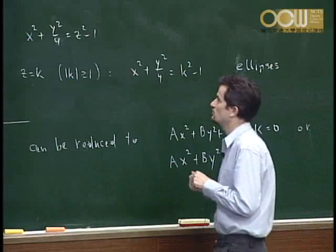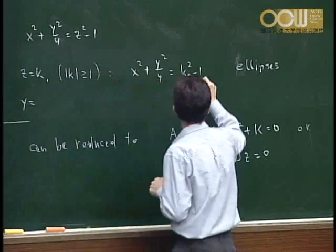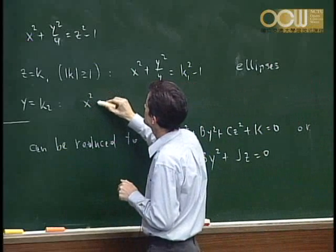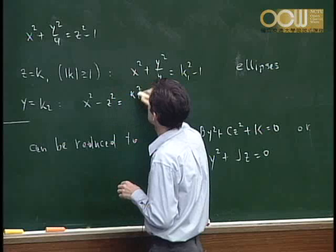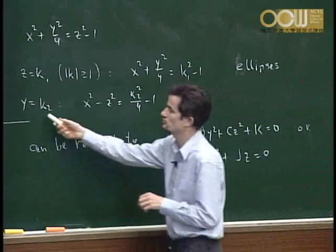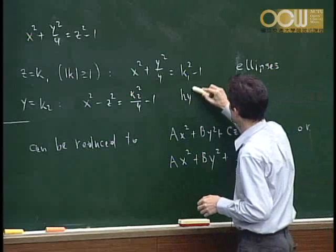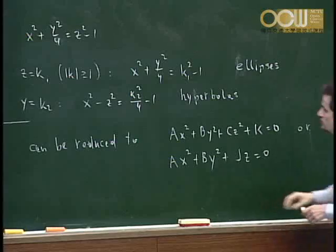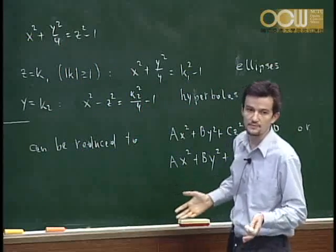If instead we set y equal to some constant k2, then we have x squared minus z squared equal to k2 squared over 4 minus 1, and the cross-sections are hyperbolas. Similarly, cross-sections parallel to the yz-plane are also hyperbolas.